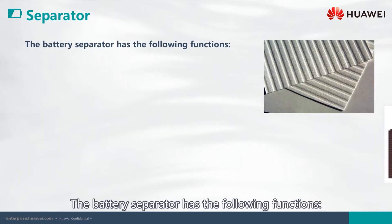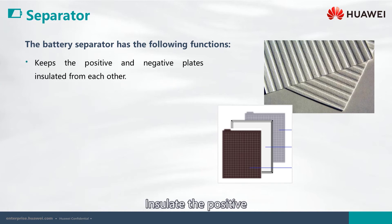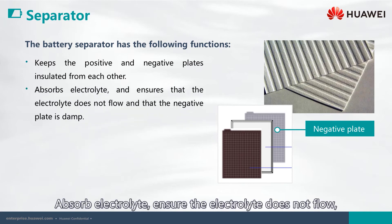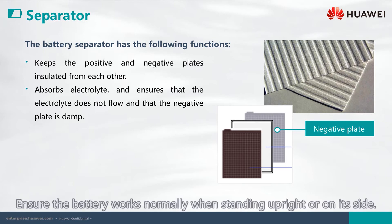The battery separator has the following functions: insulate the positive and negative plates from each other to prevent short circuit; absorb the electrolyte, ensure the electrolyte does not flow, and ensure the negative plate is damp; ensure the battery works normally when standing upright or on its side.